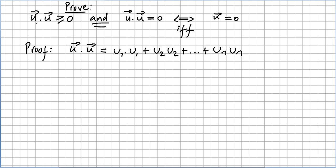So the proof: let us pick u times u. What is u times u, the inner product of u with u? That is the sum of the products of the components: u1 times u1 plus u2 times u2 plus ... plus u_n times u_n. These are numbers, so u1 times u1 is u1 squared, u2 times u2 is u2 squared, u_n times u_n is u_n squared. A squared number can only be positive or 0. So the whole sum will be positive or 0.